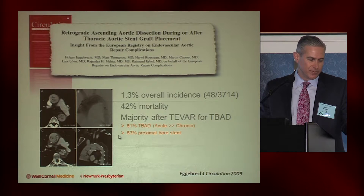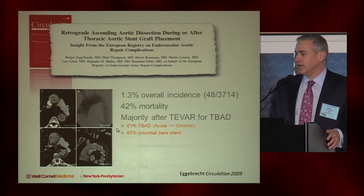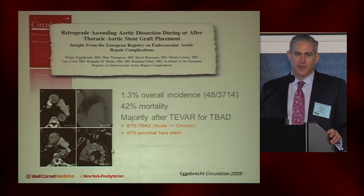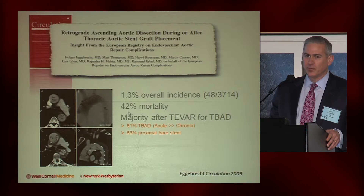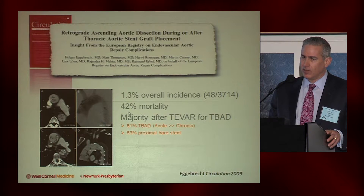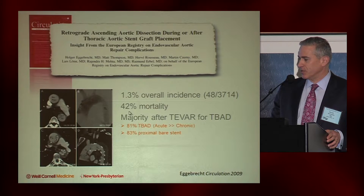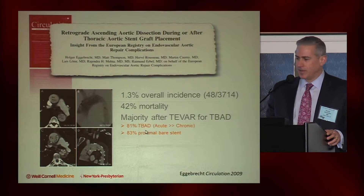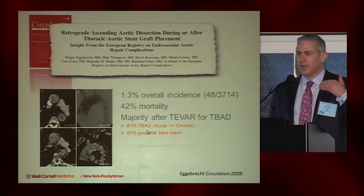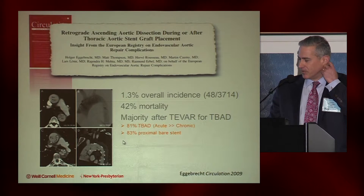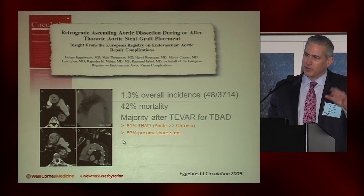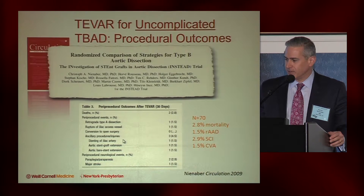The most feared complication is creating a retrograde aortic dissection involving the ascending aorta — a very dangerous event with 42% mortality. Fortunately it's relatively rare overall at 1.3% in TVAR all comers, but it's much more common when treating type B aortic dissections than aneurysms, and much more common in the acute phase than the chronic phase. There was a suggestion in the literature that this was related to proximal bare stents, though that hasn't been totally confirmed in subsequent data.